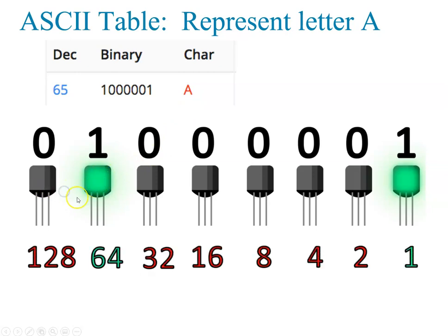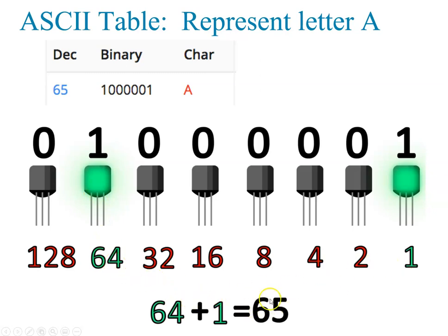Using the powers of 2 we learned previously — 1, 2, 4, 8, 16, 32, 64 — the micro-transistor corresponding to 64 has power, and the one corresponding to 1 has power. Adding 64 and 1 gives 65, which equals letter A. So if you were to write an essay, imagine how many micro-transistors have to switch on and off. All of this is happening in your main memory, which has a bunch of micro-transistors like this.